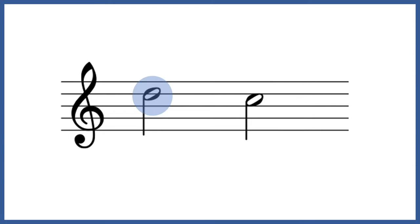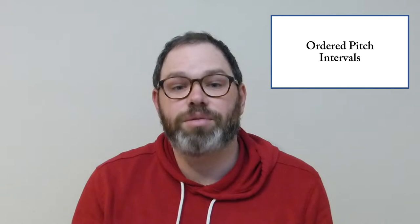If we're starting on this D up here and we descend to this C down here, we'd say minus 2, because it's two semitones in the downward direction. These are, more specifically, called ordered pitch intervals. They're the most specific of the four ways of looking at intervals that we're discussing in this video. Other times, we might only be concerned with the space between the pitches and not the direction of the interval. These are called unordered pitch intervals, and we simply refer to them by the number of semitones between them, without a plus or minus sign.